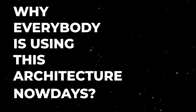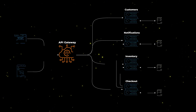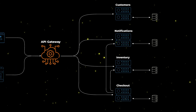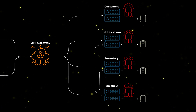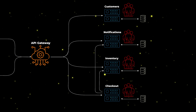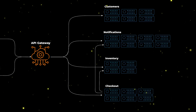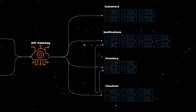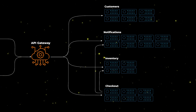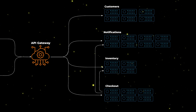Here comes the big question: why is everybody using this architecture nowadays? The reason can be summarized in one word — decoupling. Having functionalities separated in this way accelerates the development process, because you can have dedicated teams that manage each microservice independently of the others. Each component can be scaled separately, thus accommodating different variations in traffic load. This is a big plus compared to a monolithic architecture, where you can't scale different functionalities independently — you have to scale the entire application, which is not optimal from a cost perspective.